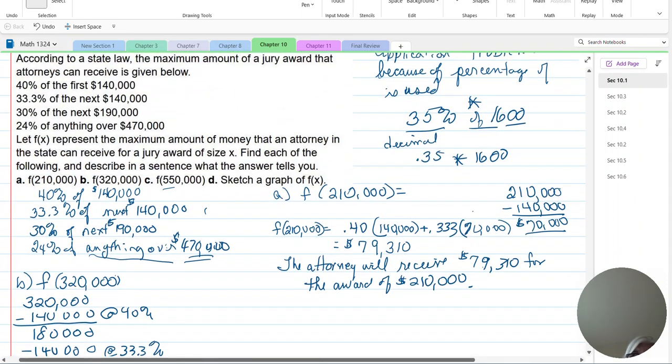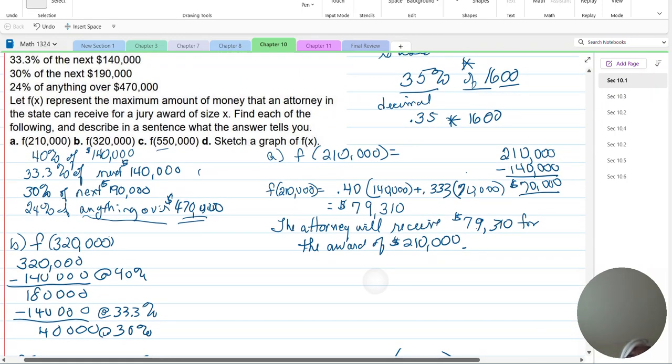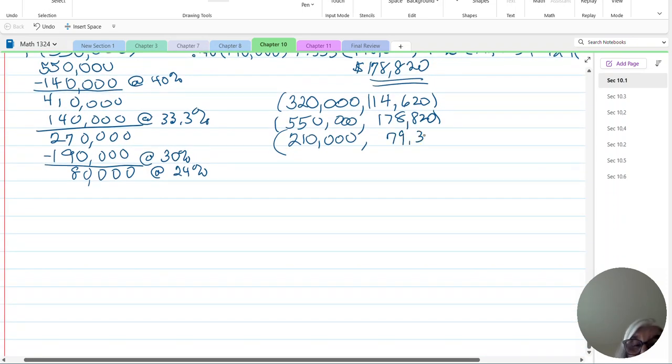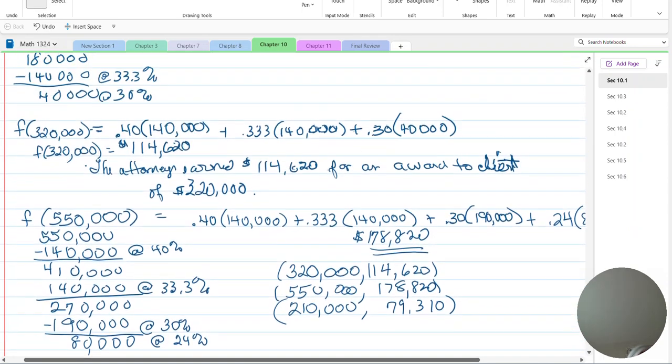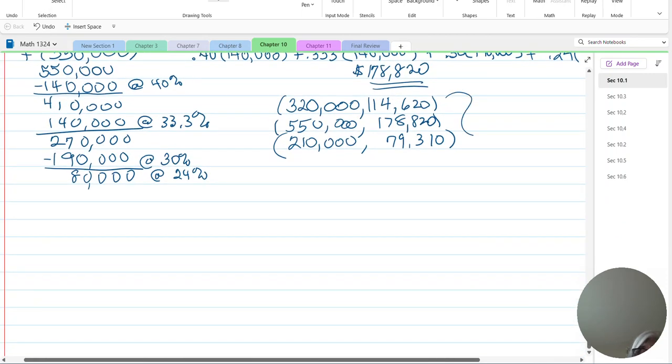We're going to award $178,820. And our A was 210, $210,000. And the attorneys will get 79,310. So these are the values we have. I think I did all of them. And you look for these on the graph given. And you'll be fine. Thank you so much for listening. Now do the homework.